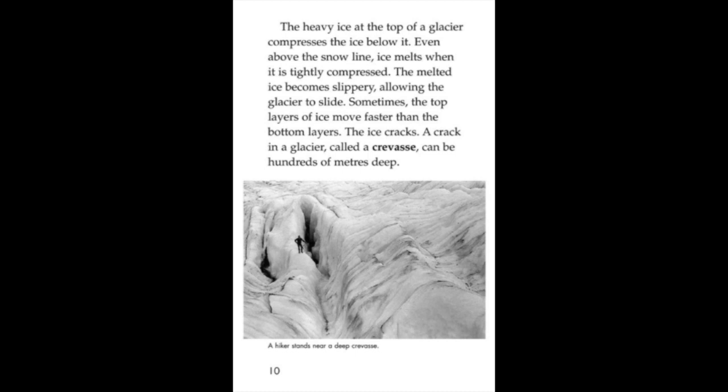The heavy ice at the top of a glacier compresses the ice below it. Even above the snow line, ice melts when it is tightly compressed. The melted ice becomes slippery, allowing the glacier to slide. Sometimes the top layers of ice move faster than the bottom layers. The ice cracks. A crack in a glacier called a crevasse can be hundreds of meters deep.